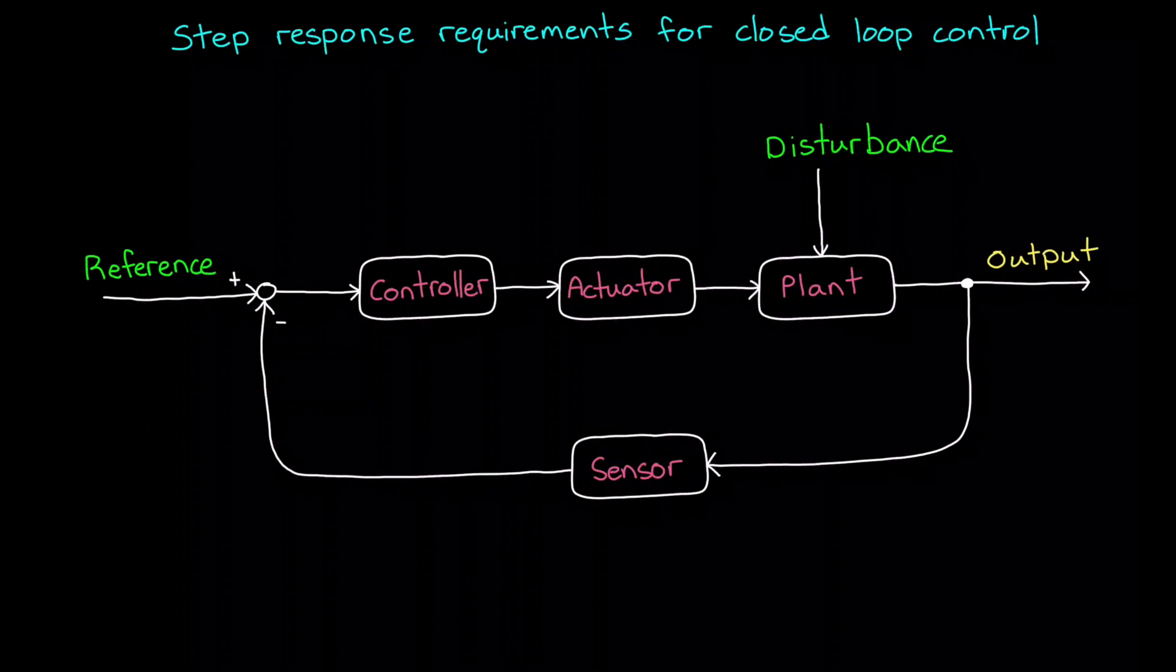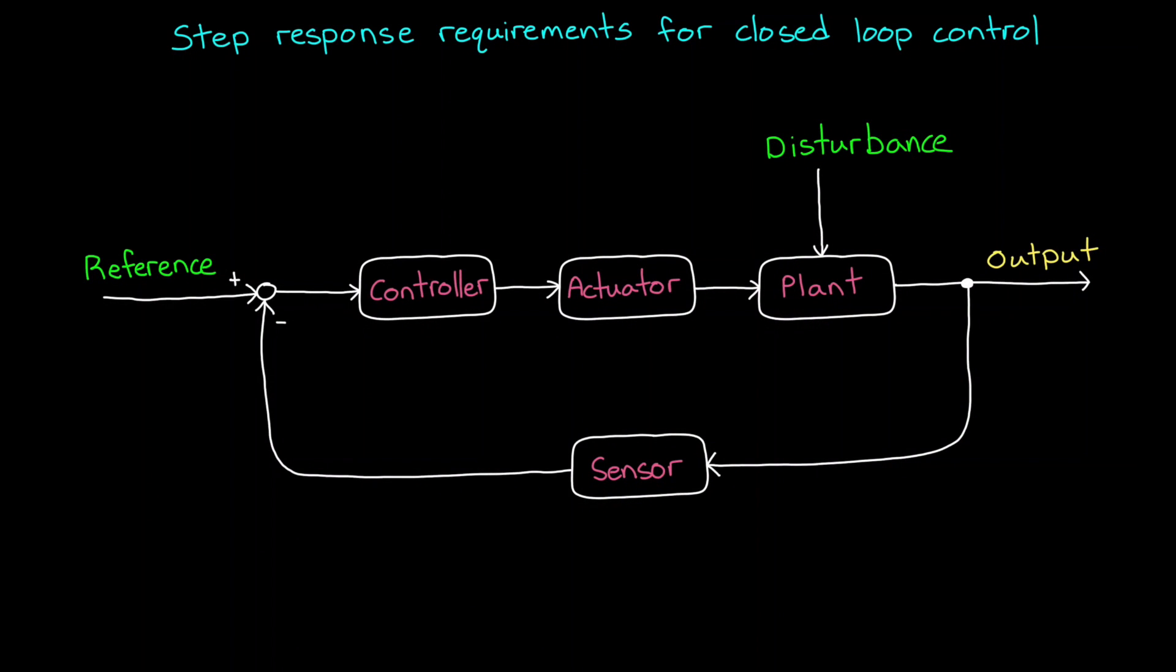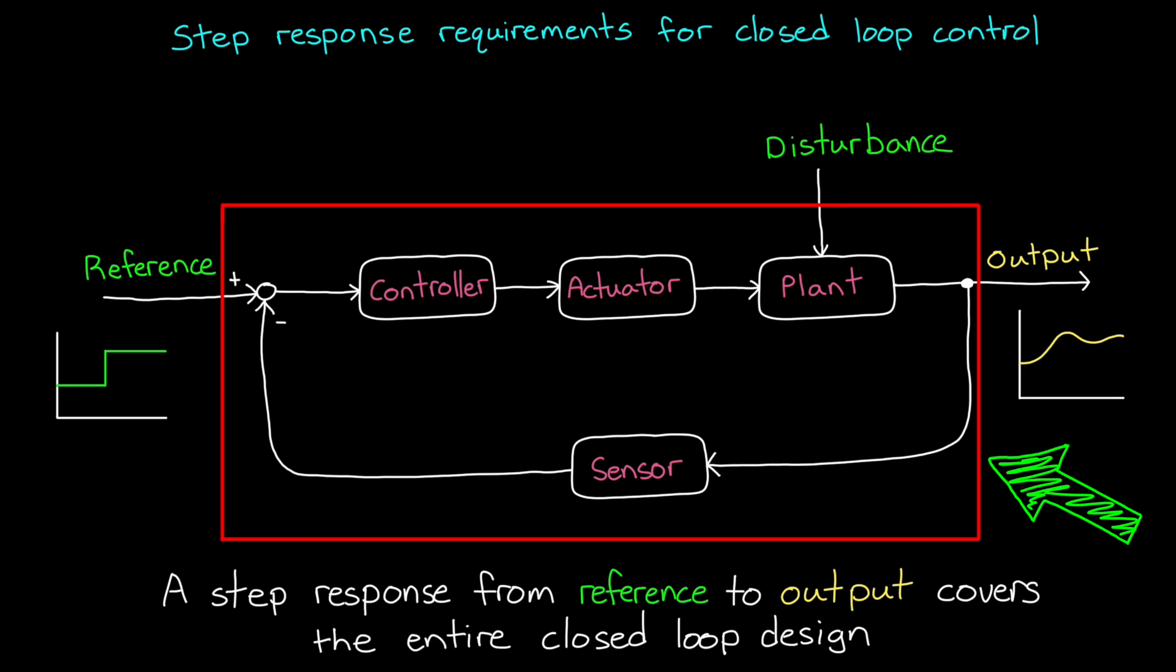Now when we're talking about step response requirements for a closed loop control system, we're looking at the step response from an input into the loop, like a reference signal or a disturbance, to the output of the system. For the drone that we just talked about, we stepped the reference signal from 10 to 20, and the step response was how the output, or the altitude of the drone, changed over time. So in this way, the design requirements for the altitude controller could be stated in terms of how we want the drone to react to a step input like this. And those requirements would dictate how the entire closed loop system should be designed.